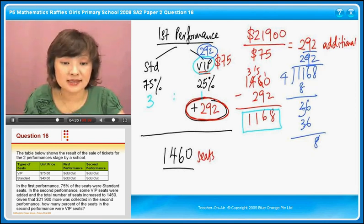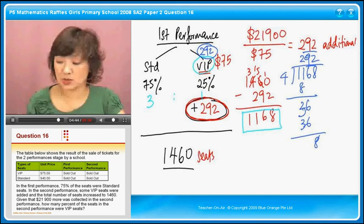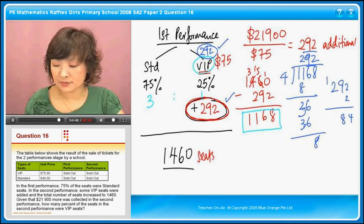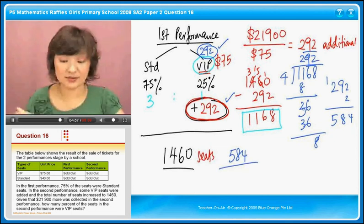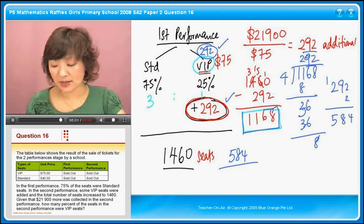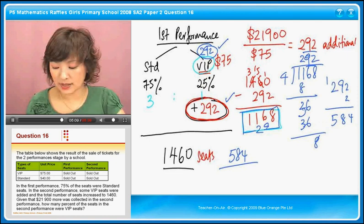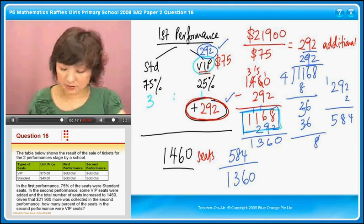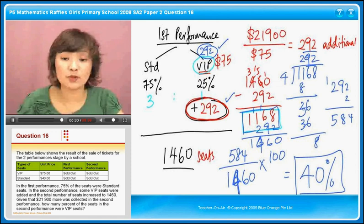How many percent of the seats in the second performance were VIP seats? In the first performance there were 292 VIP seats, and in the second performance they added another 292. So it's 292 times 2 = 584 VIP seats. Over the total of 1,460, we take 584 divided by 1,460 times 100, and the answer is 40%. So 40% of the seats in the second performance were VIP seats.